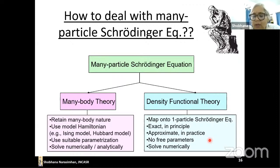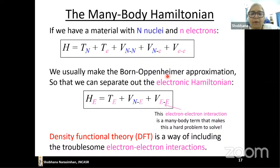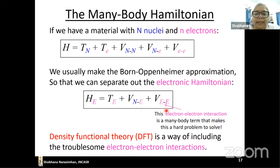The many-body Hamiltonian includes the kinetic energy of nuclei, kinetic energy of electrons, Coulomb interactions between nuclei, between nuclei and electrons, and between electrons. Using the Born-Oppenheimer approximation we separate out the electronic Hamiltonian. It is the electron-electron interaction term that makes it hard to solve. DFT is a very clever way of treating these troublesome electron-electron interactions.